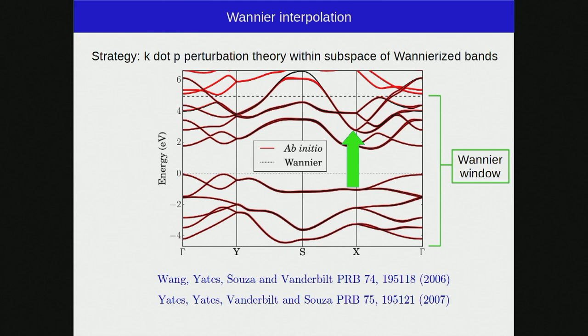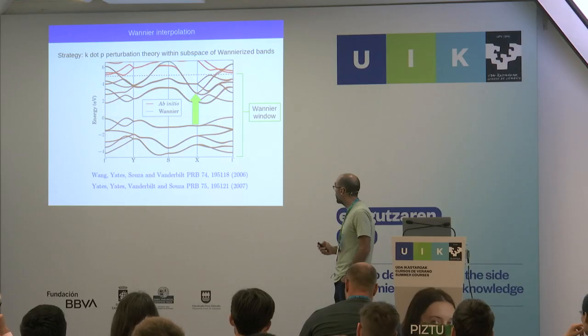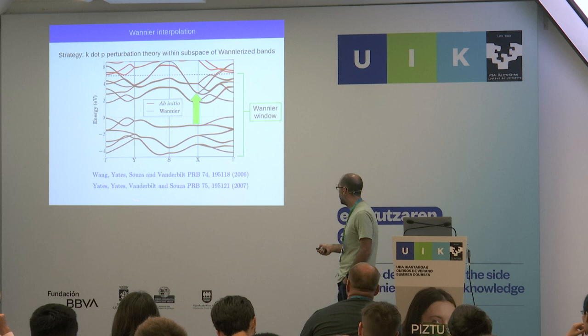Returning to Wannier interpolation: the strategy is to do k·p perturbation theory within a subspace of Wannierized bands. In practice, one chooses an energy window where the excitations of interest happen — say, the 2 to 4 eV range — and computes matrix elements within that subspace. This was developed especially in two papers by the same authors.